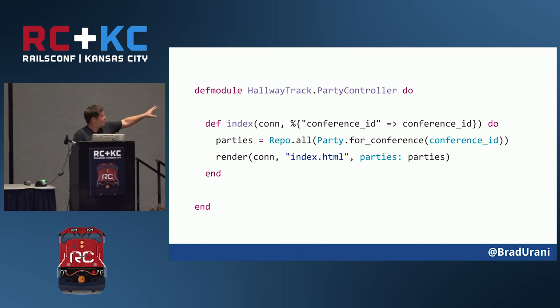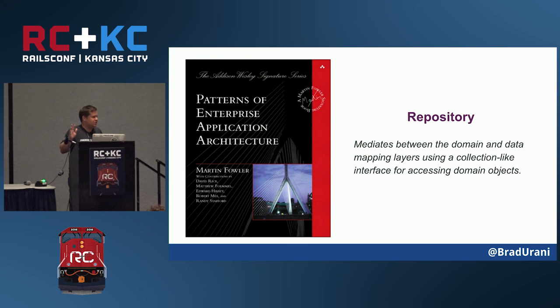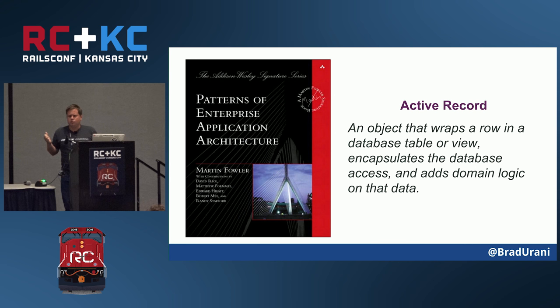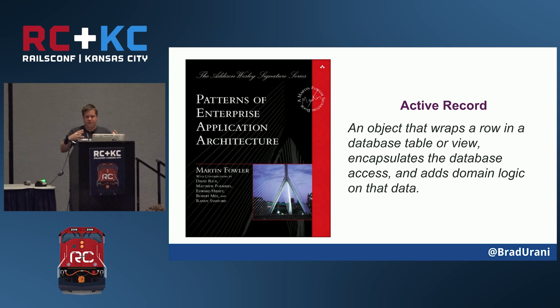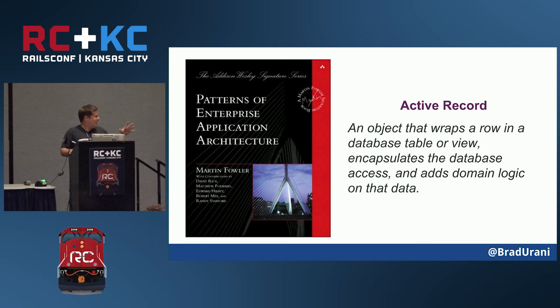We've got two parts to our query: a repo and a for_conference that returns a query. This is called the repository pattern — Martin Fowler defined this in his book — versus the active record pattern: an object that wraps a row in a database table. Active Record in Rails is actually a melange of class methods more like repository, instance methods more like active record, with hints of data mapper mixed in. While Active Record has grown over time into this meta-pattern, the patterns in Ecto are a little more finite.